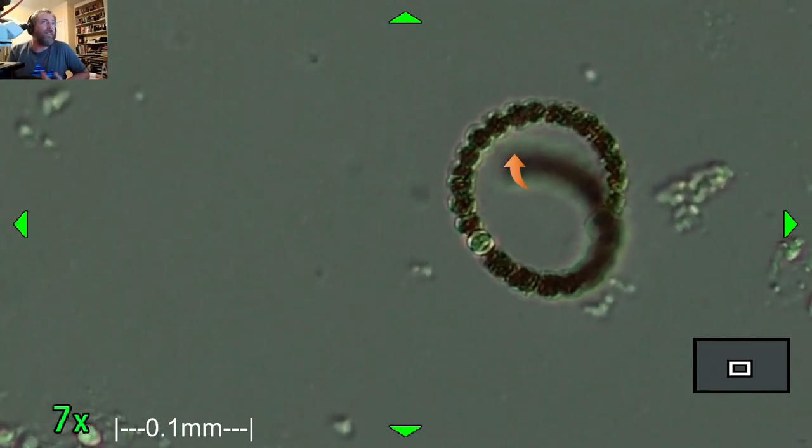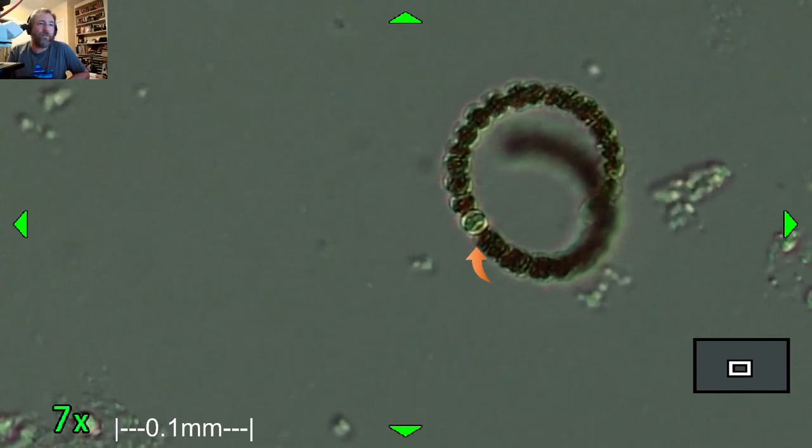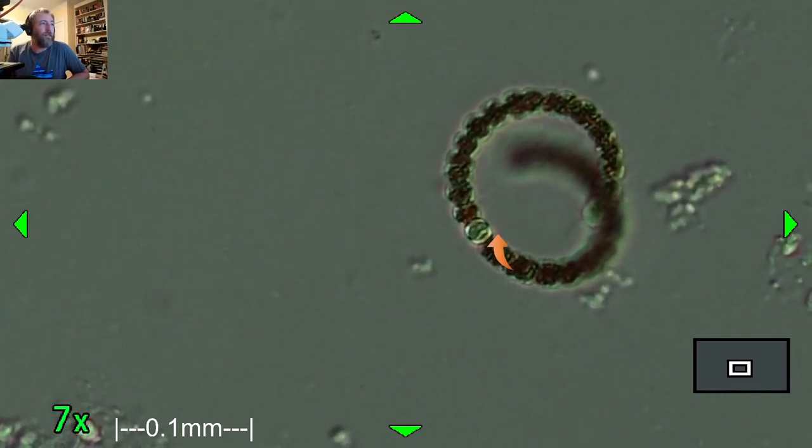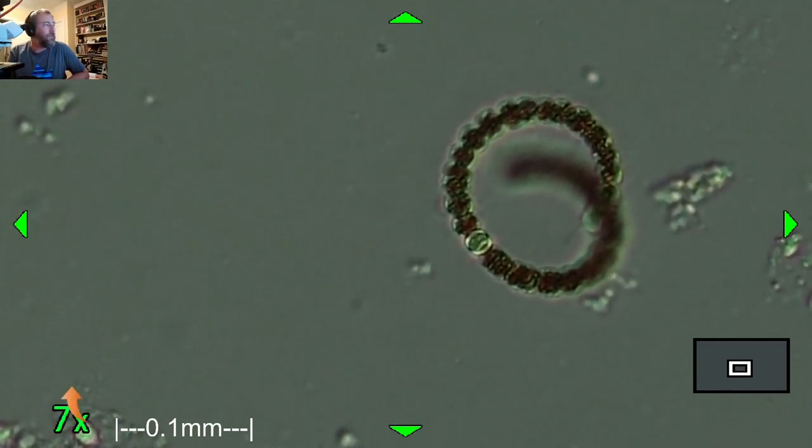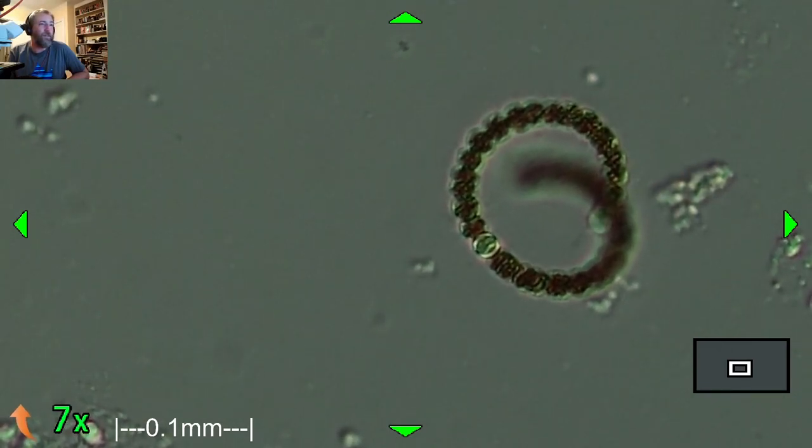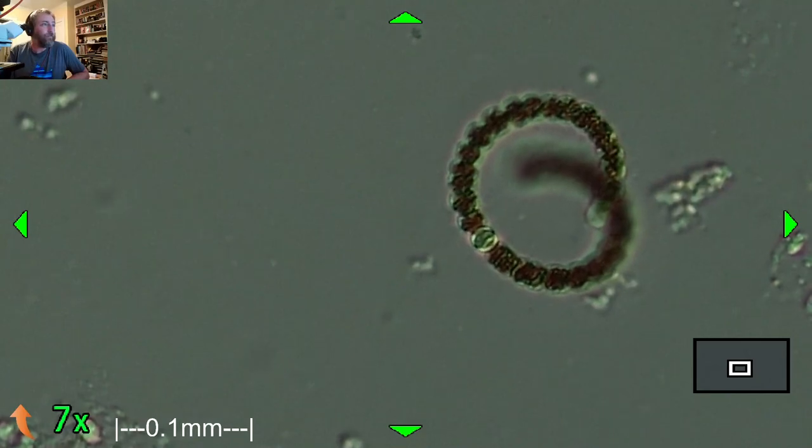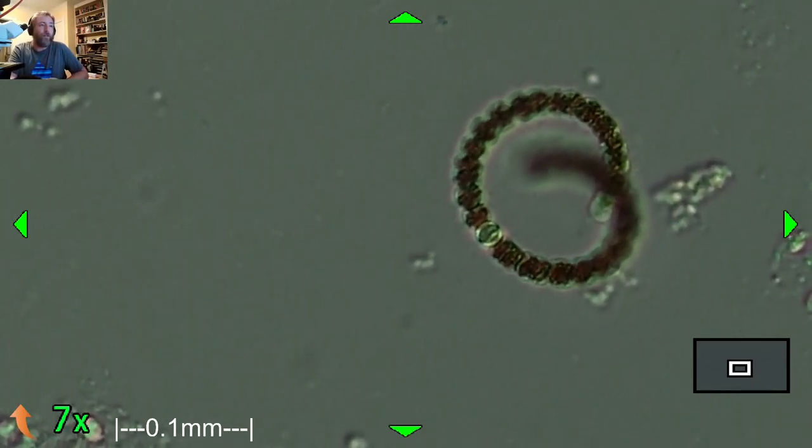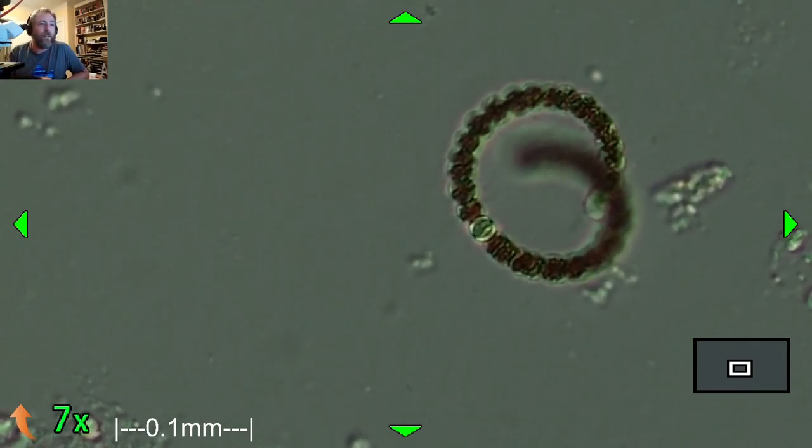So hetero just means different, and cyst just means like a cell. So the cell is different than the rest of them that are on this strand. And that's because it's filled with something called nitrogenase, I think it is, which they use to turn nitrogen gas into nitrates that they can then use for food. And this is a nitrogen-fixing cyanobacteria. And it's one of the marvels of nature, actually.